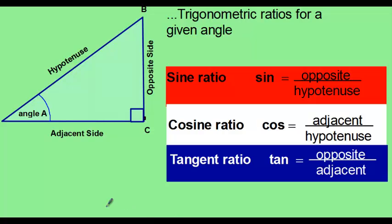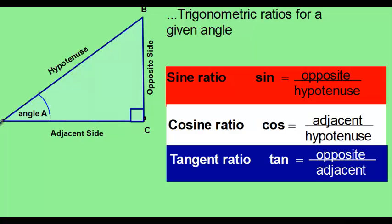For any given right triangle with an angle A, the opposite side is the side that is not touching the vertex. The vertex for angle A is at point A. The opposite side is not touching the vertex. The hypotenuse is the side opposite the right angle. The adjacent side is the other side, and both the hypotenuse and the adjacent side always touch the vertex.